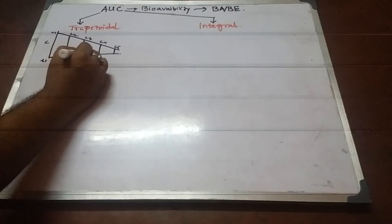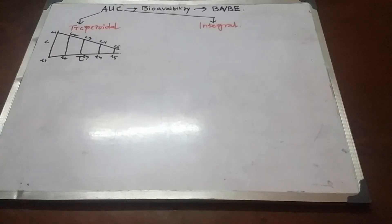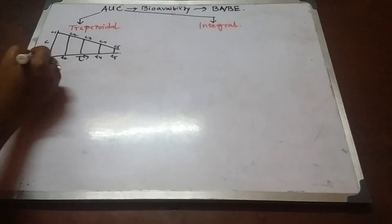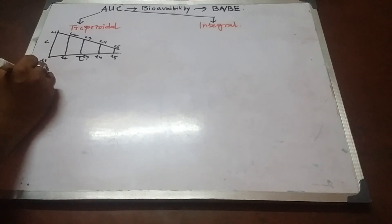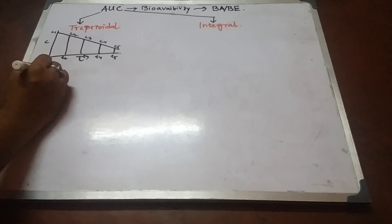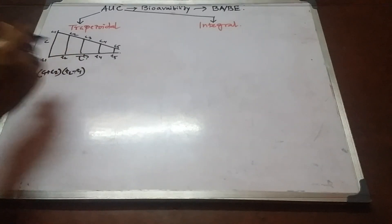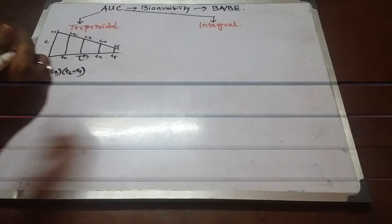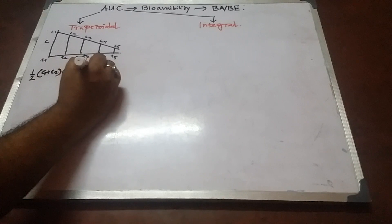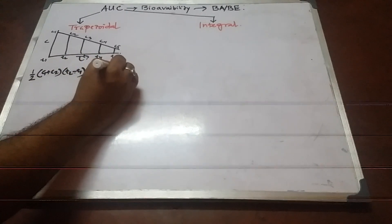The trapezoidal formula for each section is: one-half times (C1 plus C2) times (t2 minus t1), giving the area of the first trapezoid. We continue summing adjacent trapezoids across all time intervals up to the last measurable concentration point.